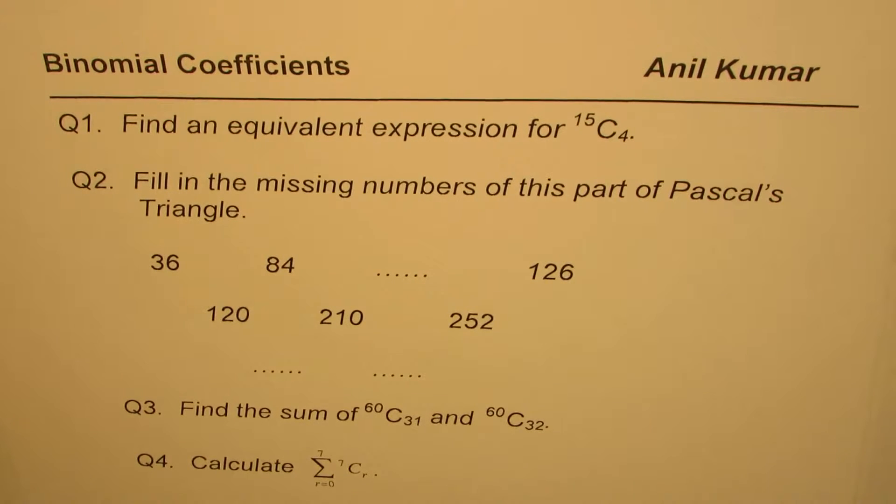Question number three is find the sum of 60 choose 31 and 60 choose 32. And question number four is calculate the sum where r goes from 0 to 7 for 7 choose r.